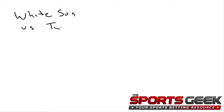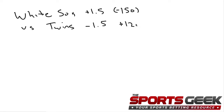Here's an example of what a run line will look like at a sportsbook. You're going to have the two teams that are playing, and then the underdog is going to be plus 1.5 and the favorite is going to be negative 1.5 on the run line, and then we're also going to have betting odds associated with either side. This is pretty much the same as betting against the spread in football, except with baseball we're always going to have a one and a half run spread or run line.